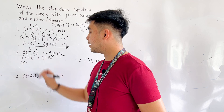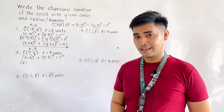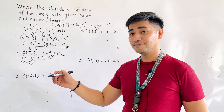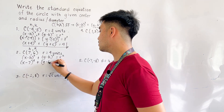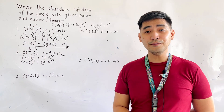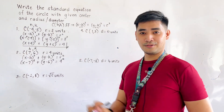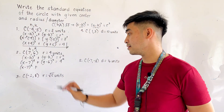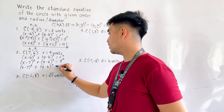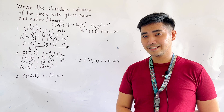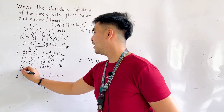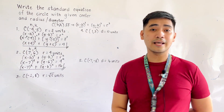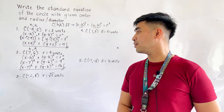Substituting into the equation: it becomes x minus 7, quantity squared, plus y minus 6, quantity squared, is equal to 4 squared. Simplifying, we get x minus 7, quantity squared, plus y minus 6, quantity squared, is equal to 16. That is the standard equation of the circle with center located at (7, 6) and radius equal to 4 units.